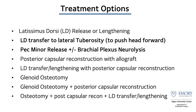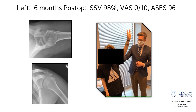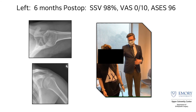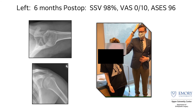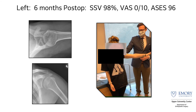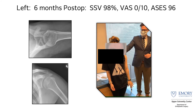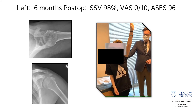Because of her latissimus spasm and scapular dyskinesia, we performed a latissimus transfer to her greater tuberosity and a pec minor release. We were able to re-center her humeral head and gave her pretty good overall function.